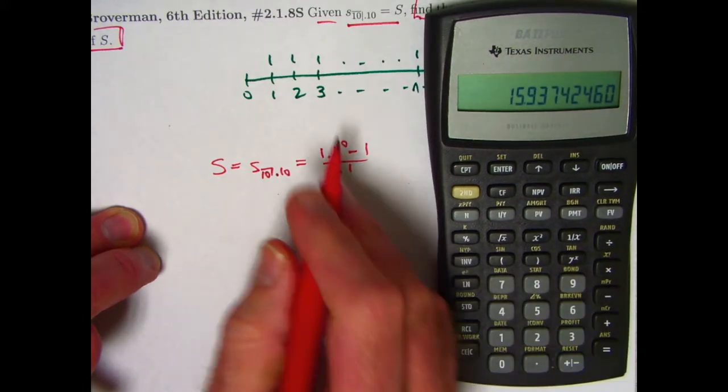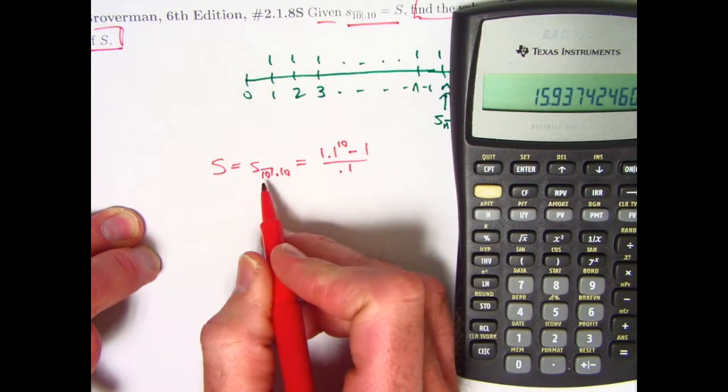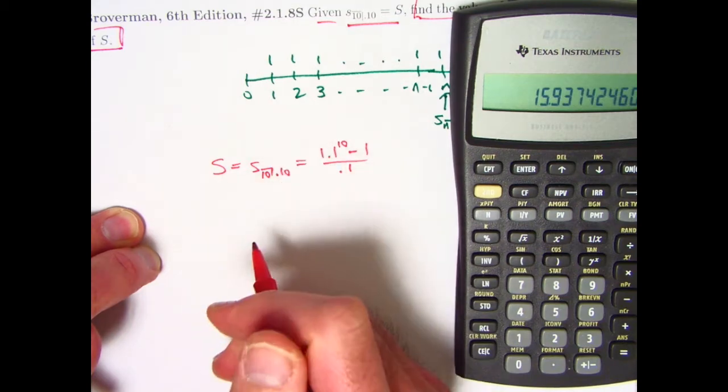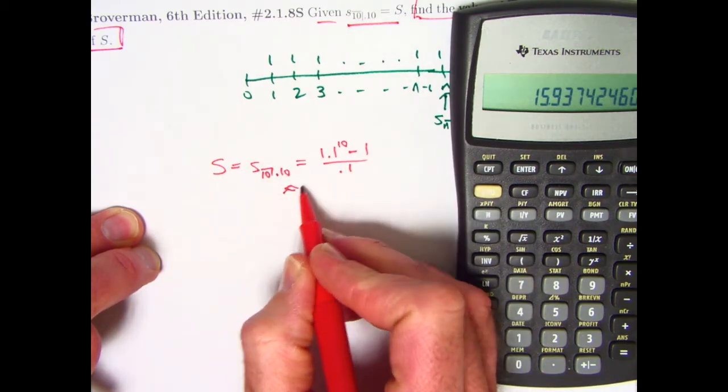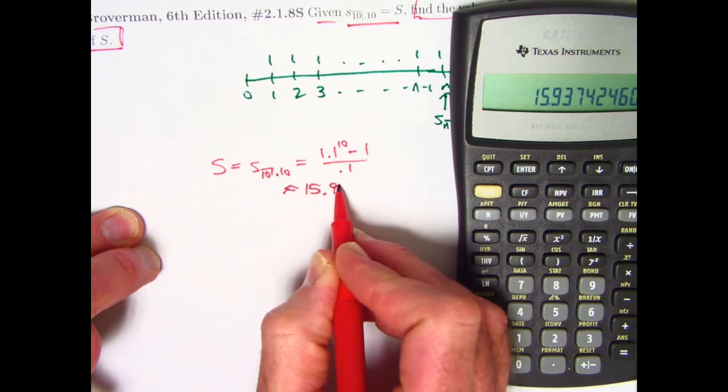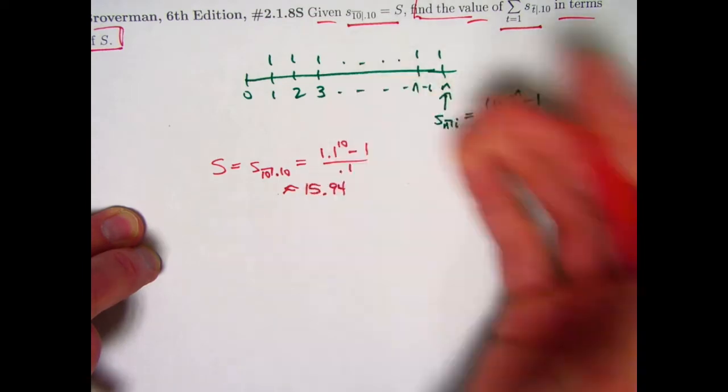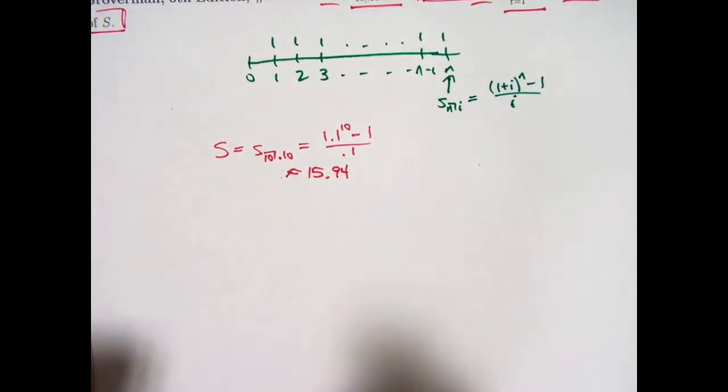This future value, the future value of these 10 payments at time 10 based on an interest rate of 10% per year, say if this time is in years, is about 15.94. More than what you put in. When you put in 10, you are earning interest.